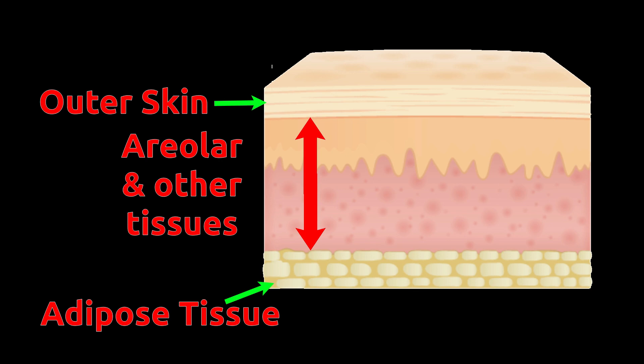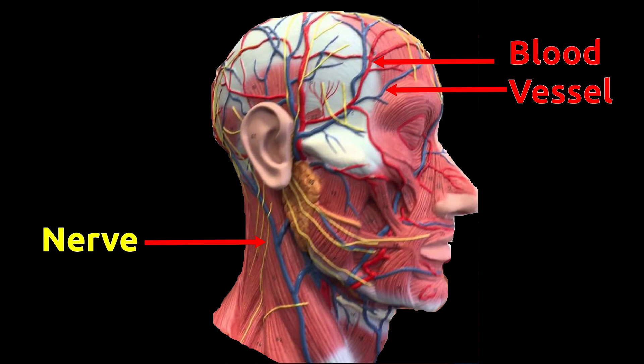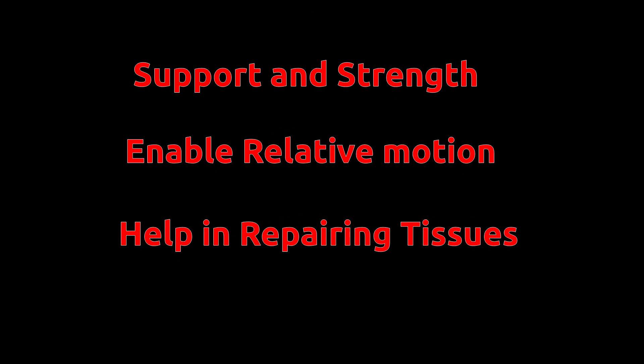Areolar tissue: Areolar tissues connect outer skin to muscles. These tissues are also found around organs, blood vessels, and nerves, connecting them to muscles. Areolar tissue provides strength and support to organs in our body. This tissue is elastic in nature and enables relative motion between organs.